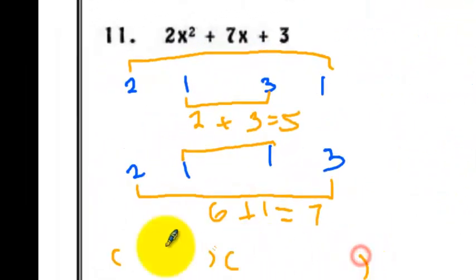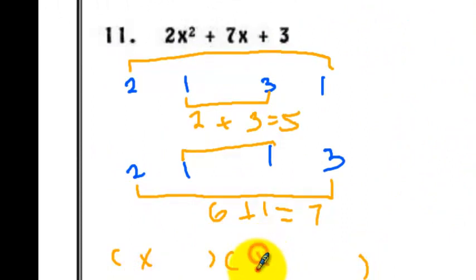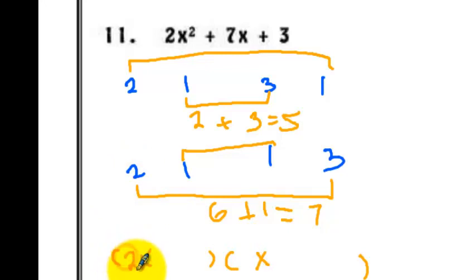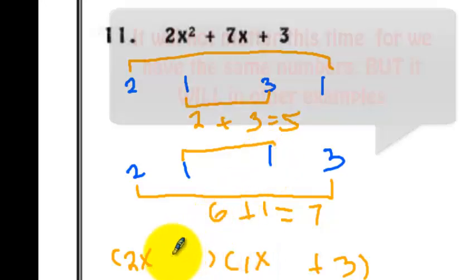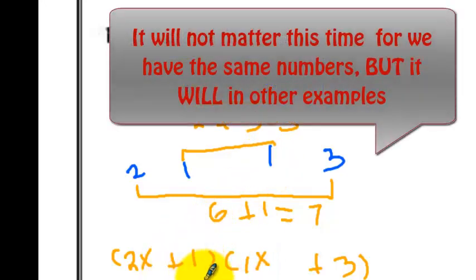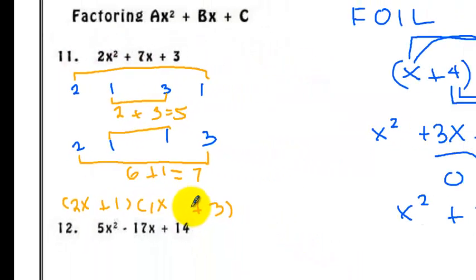Our answer will be two quantities multiplied together. I'll place x in each binomial. Bring down the 2 as the coefficient of x. The 3 is a constant. The values will cross: 1 goes here and the other goes here. So the answer is (2x + 1)(x + 3).